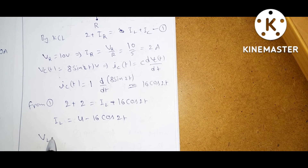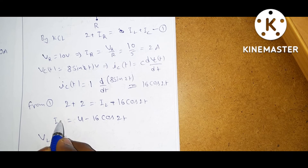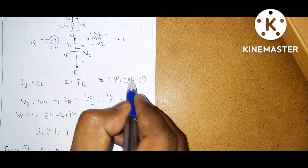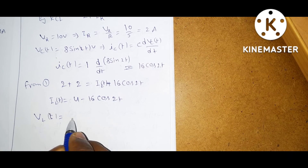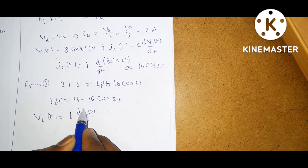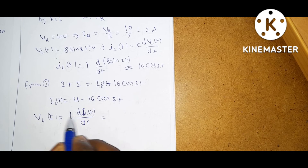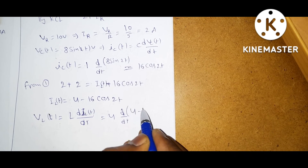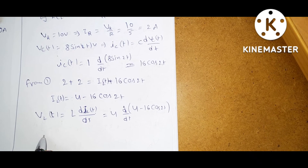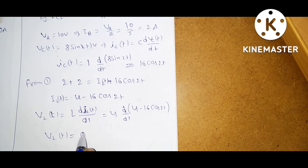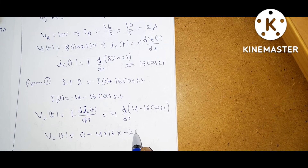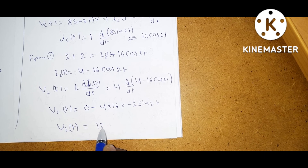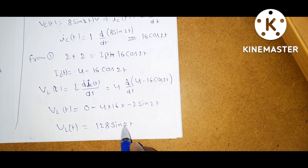Now, what is the voltage across the inductor? We know that VL(t) equals L times d(IL(t))/dt. We got IL(t) is 4 minus 16 cos 2t, and L is 4 Henry as mentioned in the circuit. So VL(t) equals 4 times d/dt of (4 minus 16 cos 2t), which gives VL(t) equal to 128 sin 2t volts.